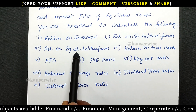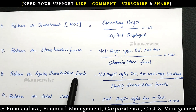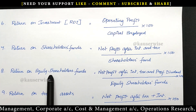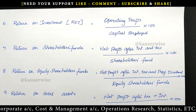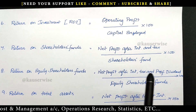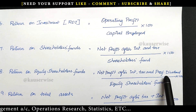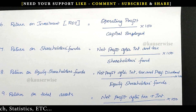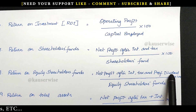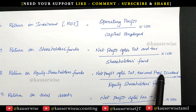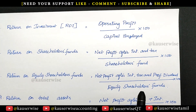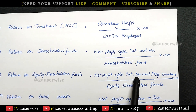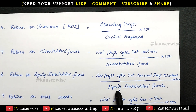The next one is return on equity shareholders fund. Here we are comparing two things: number one, the net profit available to equity shareholders. The format to find profit available to equity shareholders is: net profit after interest, after tax, and after preferential dividend if any. If you find any preferential share capital in the capital structure, you have to pay preferential dividend to them out of the profit. After paying all these things, the residual net profit is available to equity shareholders. The formula: net profit after interest, tax, and preferential dividend divided by equity shareholders fund into 100.